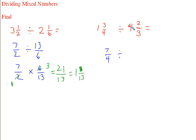4 times 3, 12 plus 2, that's going to be 14 over 3. So, this is going to be 7 over 4 times 3 over 14.